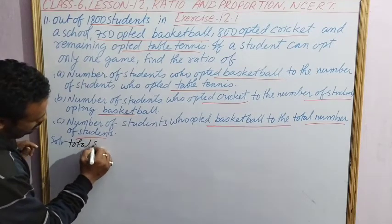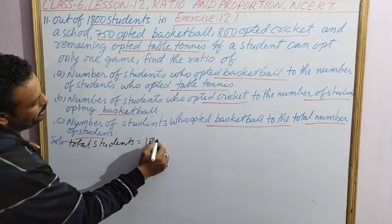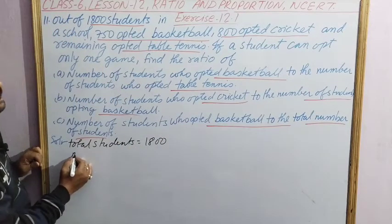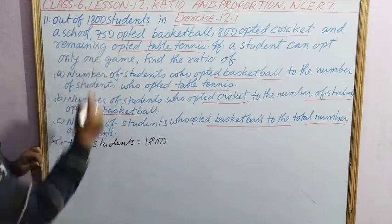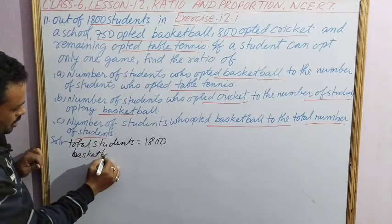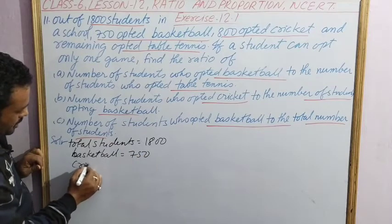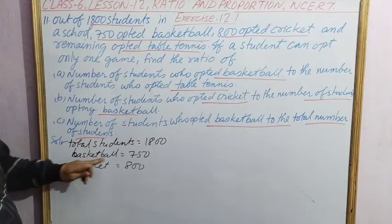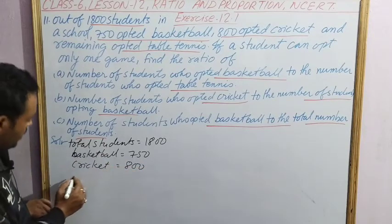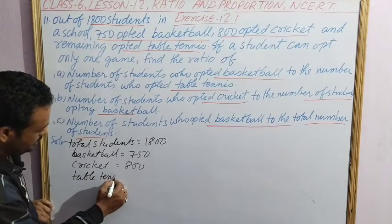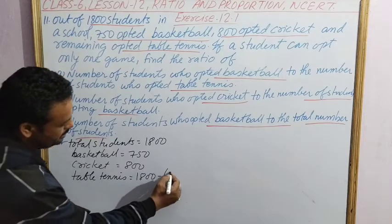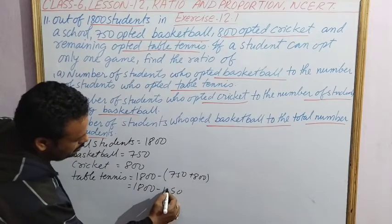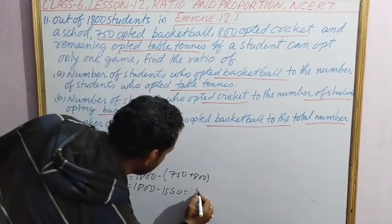Total students is equal to 1800. Number of students who opted basketball is equal to 750. Number of students who opted cricket is 800. Therefore, table tennis equals 1800 minus (750 plus 800), that is 1800 minus 1550, which equals 250. So number of students who opted table tennis is 250.